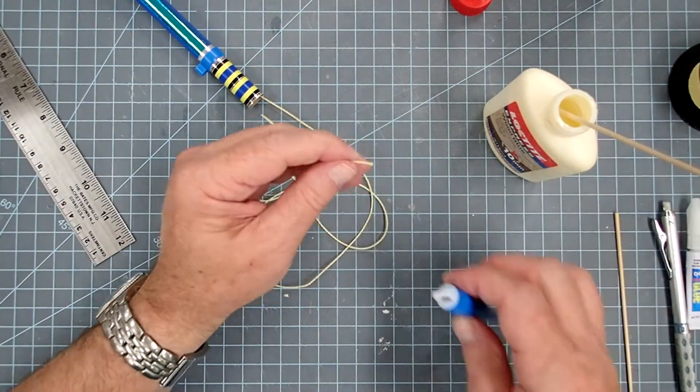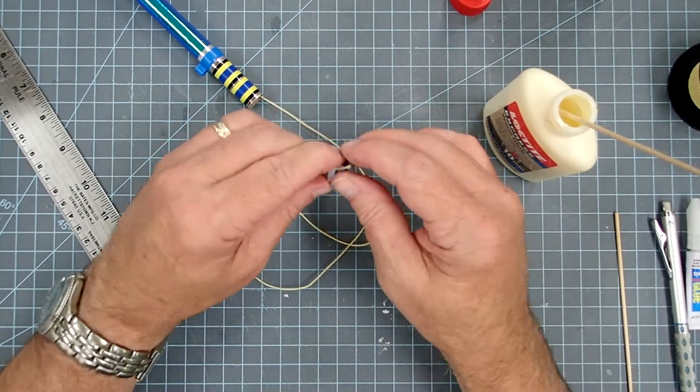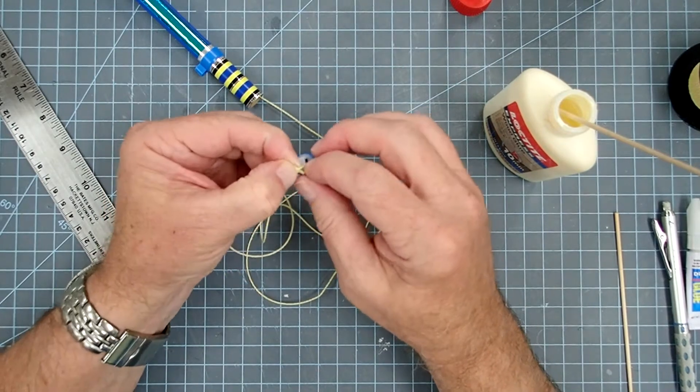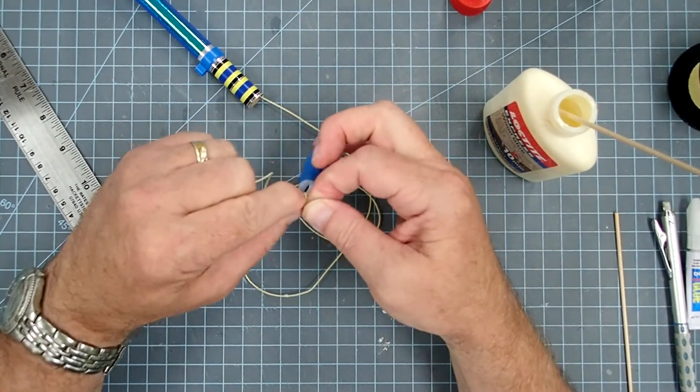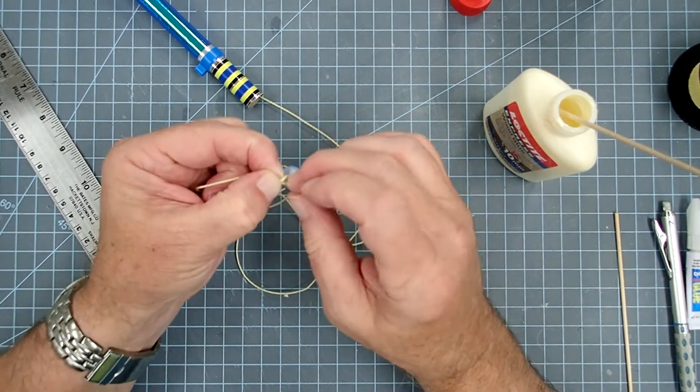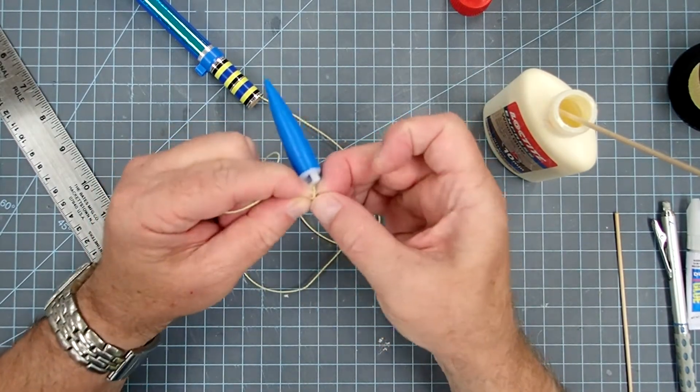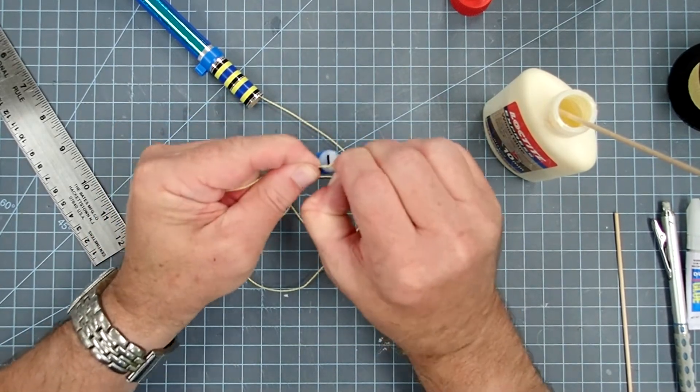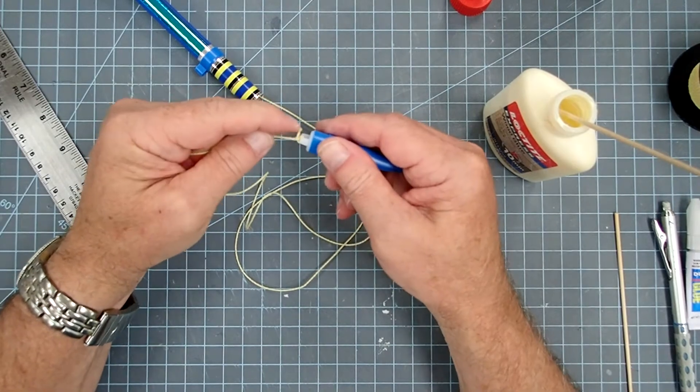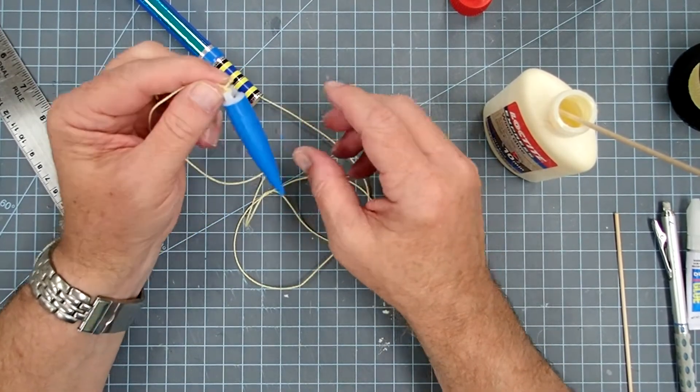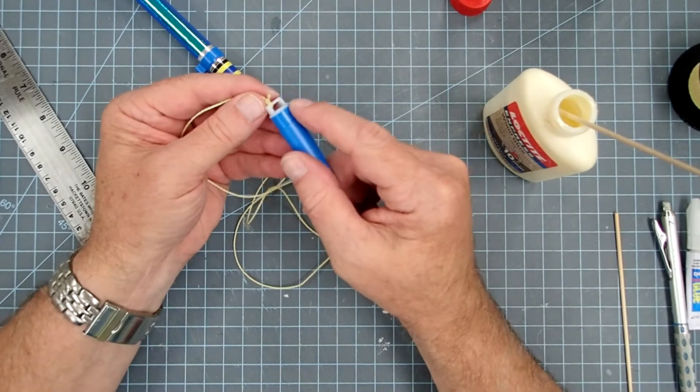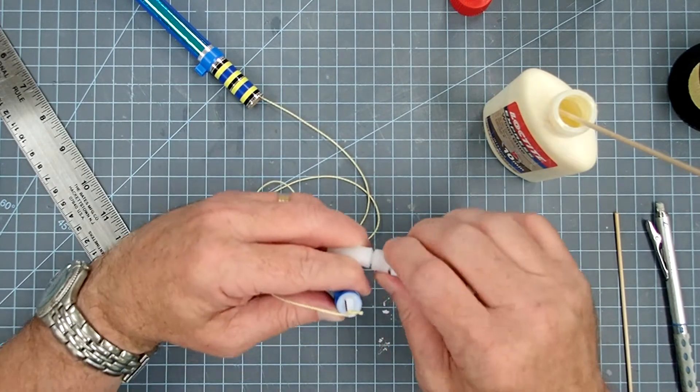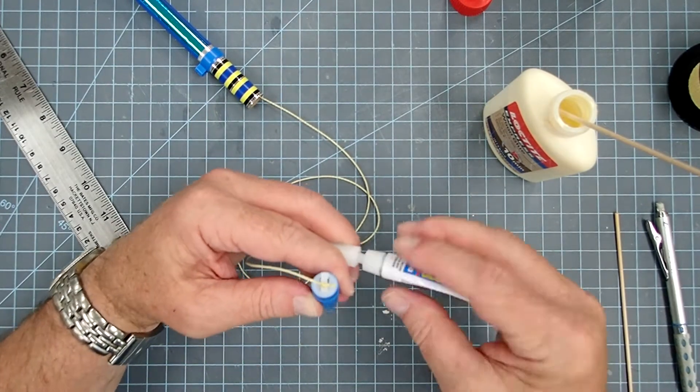And then up here on my nose cone, I'll just tie a double knot in that. And you want just a small amount of remaining line there on the free end. If this is sticking out more than about half a centimeter, trim that back so you don't get it caught up between the shoulder and the body tube. And once again, go ahead and just put a little spot of super glue on that knot.